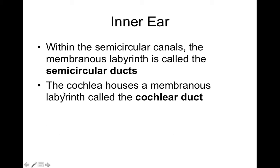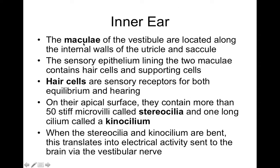When the stereocilia bend, that activates mechanoreceptors, which transduce that movement to action potentials, which gets transmitted along the vestibular branches of the vestibulocochlear nerve. The function of this macula is for head tilt. Each utricle and saccule detects the position of your head because the stereocilia and kinocilia project into the otolithic membrane, which tilts with your head, causing those stereocilia to tilt and initiate action potentials.